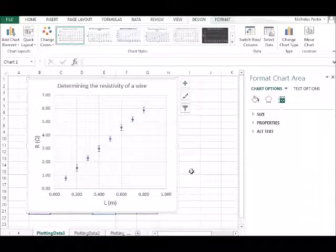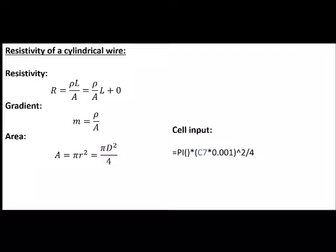Now for something that we'd usually do before starting the experiment, what does our gradient mean? Well our gradient here, resistance is resistivity times length divided by area. So if we plot resistance versus length, our gradient is resistivity divided by area.